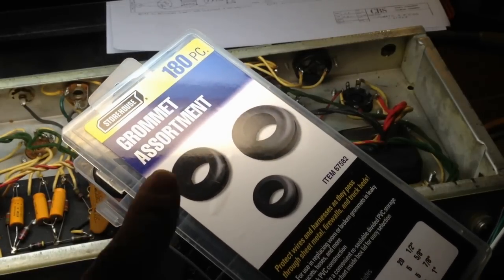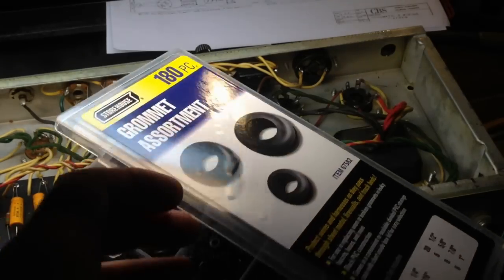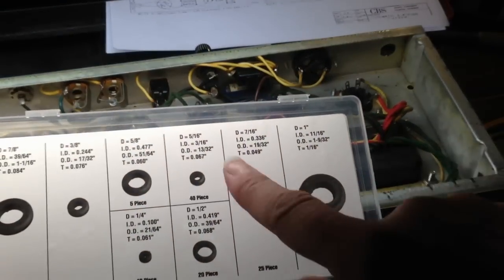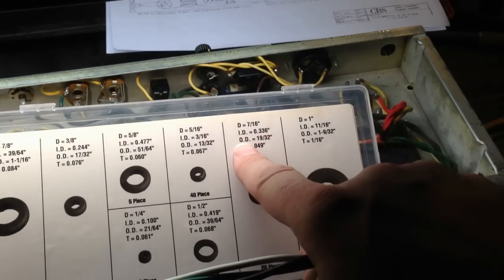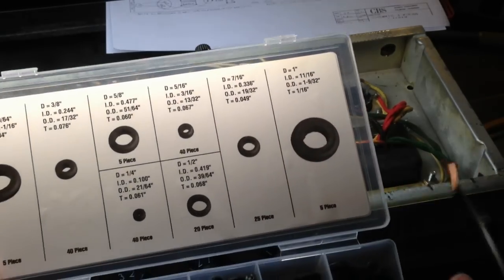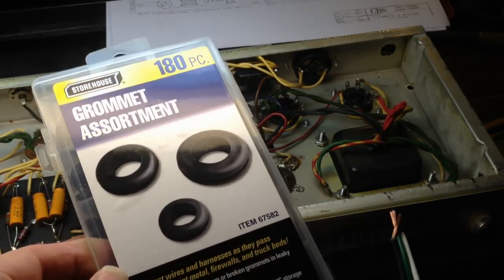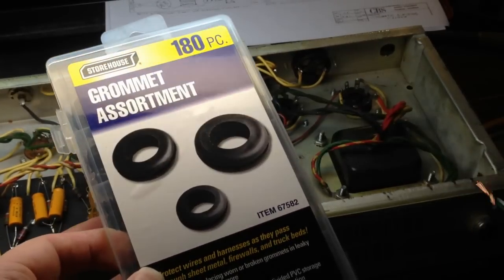Next thing you're going to need to do is select a grommet that will fit into the hole that the wire comes into. And in this case, we're going to select this grommet here, which is about the right size. This gives you your inner dimension and your outer dimension. And if you want to purchase this exact grommet set, you can get these at Harbor Freight. I will put a link down in the description below.